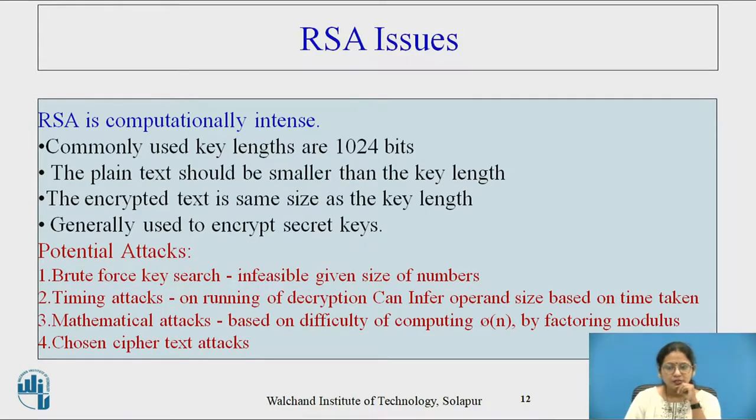Now what are the RSA issues? As we have seen, RSA is the most popular public key encryption algorithm. RSA is computationally intense. Commonly used key length is 1024 bits. The plaintext should be smaller than key length. The encrypted text is same as key length, and generally used to encrypt secret key, means it is used to send a secret key from one to another in symmetric encryption.